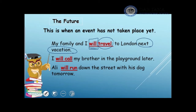Another example: I will call my brother in the playground later. 'Will call' refers to the future. I have a clue word here which is 'later' — that means I did not call him yet, but I will do so later on. Ali will run down the street with his dog tomorrow. 'Will run' refers to the future. I also have a clue word here which is 'tomorrow,' which shows the future tense.